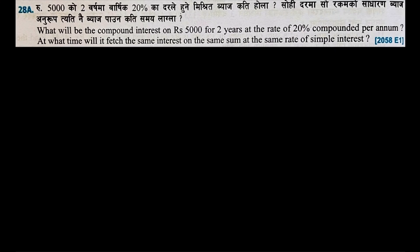Welcome back students. I am going to discuss question number 28, a long question from the chapter on compound interest. The question asks: what will be the compound interest on rupees 5000 for 2 years at the rate of 20% compounded per annum?